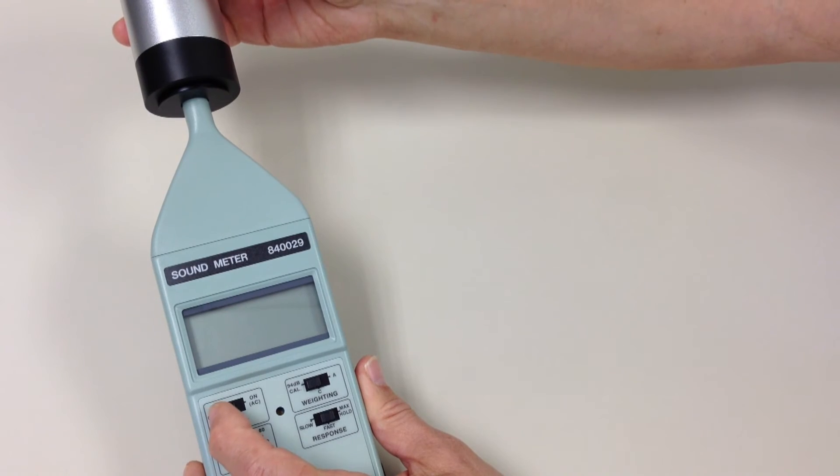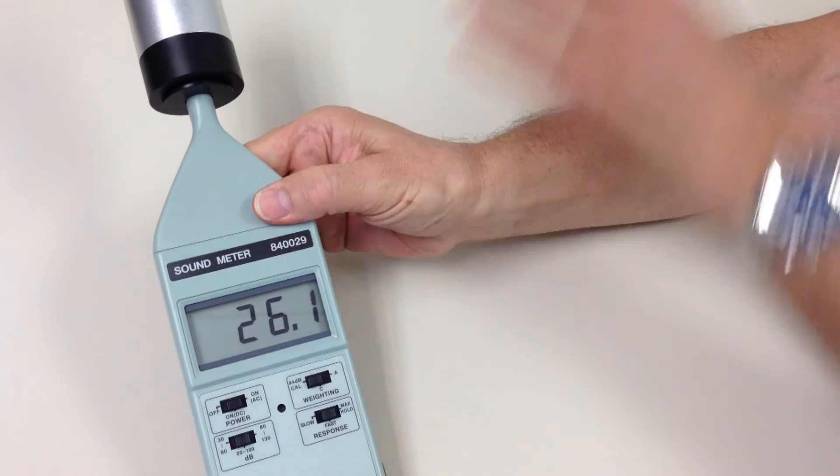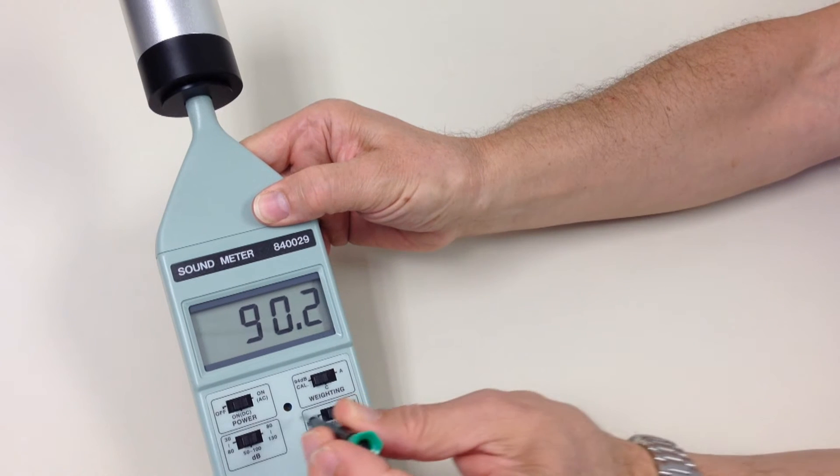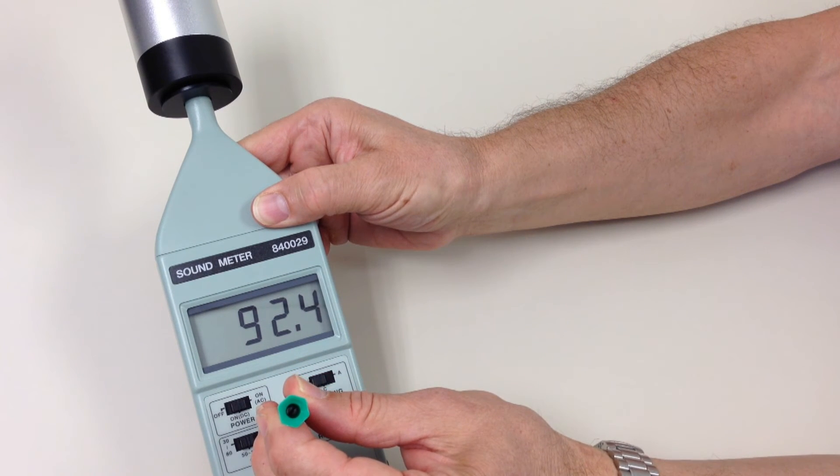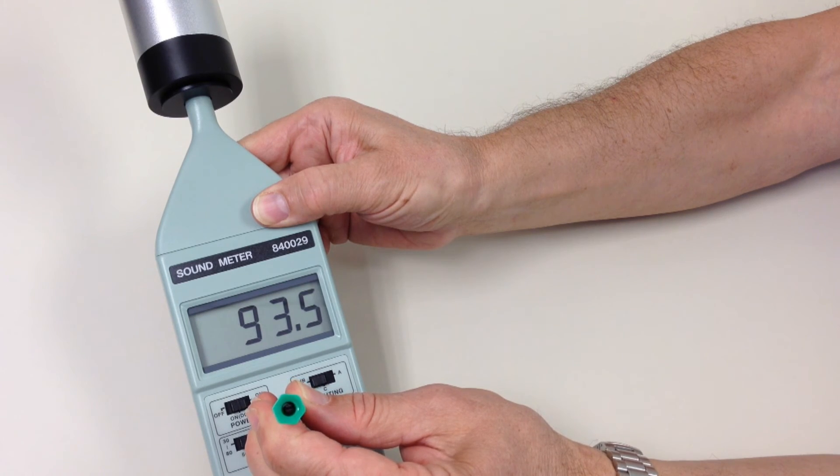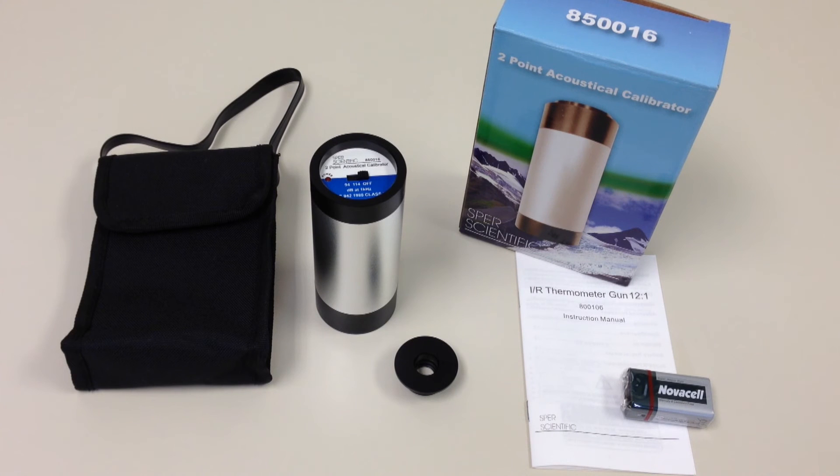Turn your sound meter on. And now adjust your potentiometer until the sound meter reads to the calibration point, in this case, 94 decibel.